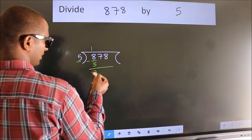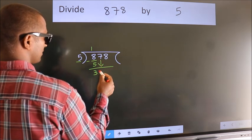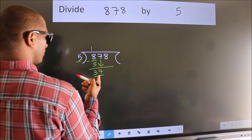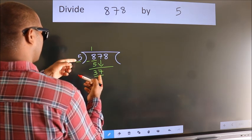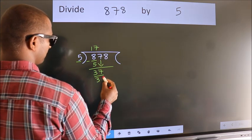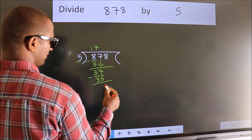We get 3. After this, bring down the beside number. So, 7 down, making 37. A number close to 37 in the 5 table is 5 7s, which is 35. Now we subtract and get 2.